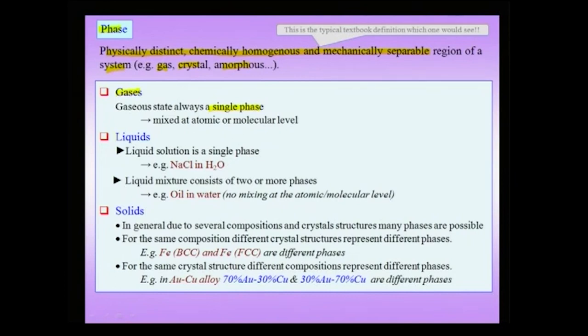In liquids, you could have for instance sodium chloride in water — basically taking salt and dissolving it in water — this solution is a single-phase solution. But additionally you could also have cases where there are more than two phases, for instance oil in water. There is no mixing at the atomic level of oil in water, and therefore oil and water phase-separate and there is a distinct interface between the two phases. Liquids may mix like alcohol in water, liquids may dissolve solids and form a single phase, or they could be separated out like oil and water.